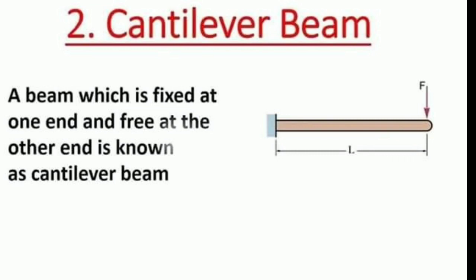The second type is the cantilever beam. One side is free and has a load on it, while the other side is fixed. So one side is fixed and the other is free — this is the cantilever beam. For example, a beam projection that is fixed on one end is a cantilever beam.